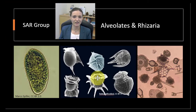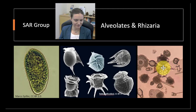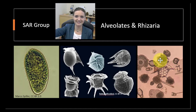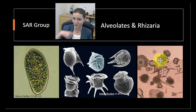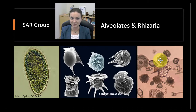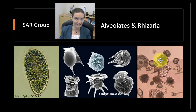Over here, the rhizarians are some weird little critters. They're kind of like amoebas with shells - they secrete a shell around their cell body, but then send out what we call pseudopods, little extensions of their cytoplasm, to move around and trap food. So they're kind of like shelled amoebas.